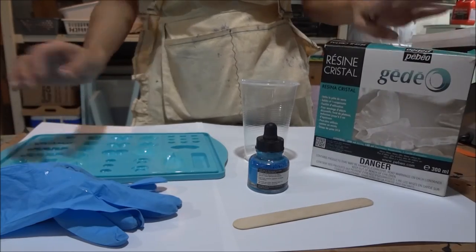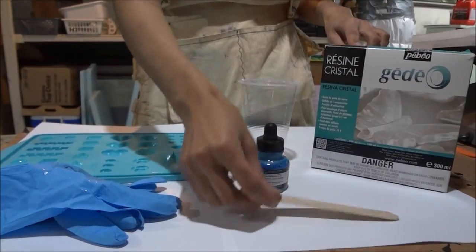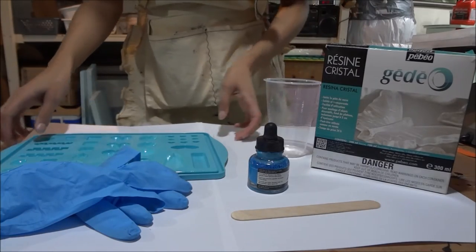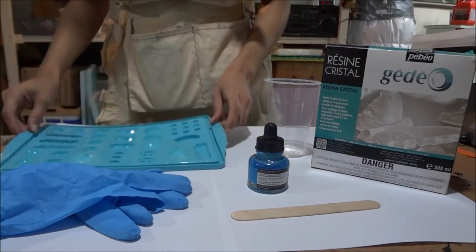So you're going to need a resin kit, a mixing stick which usually comes with the resin kit, some gloves, a mixing cup, a silicone mold, or any mold.